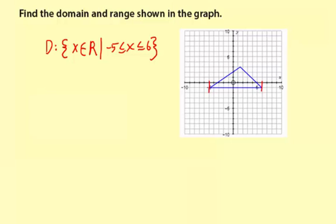Let me read the whole thing to you. The domain is x is an element of the real numbers such that the vertical bar x is greater than or equal to negative 5 less than or equal to positive 6. And that's what the x values are on this graph.